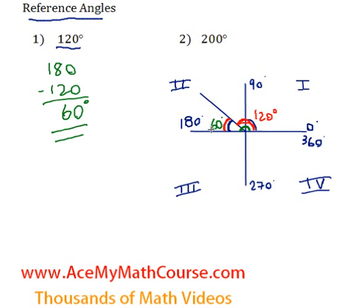Note how 60 degrees plus 120 would add up to 180. Okay, how about question number two? Now what is the reference angle for 200 degrees?